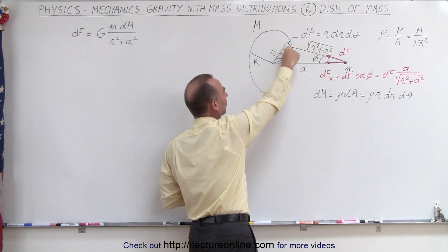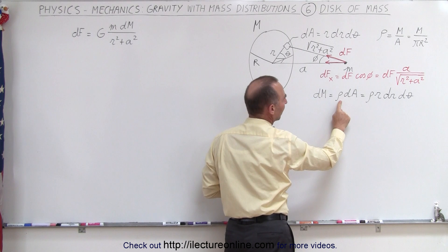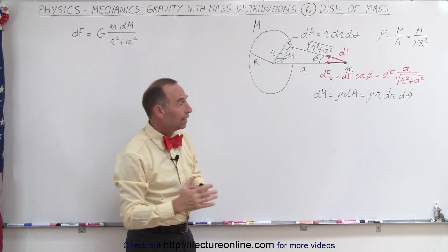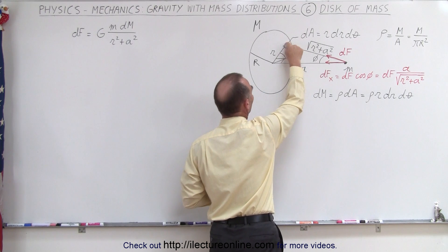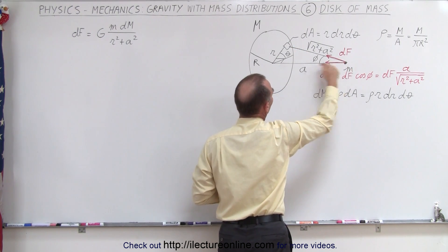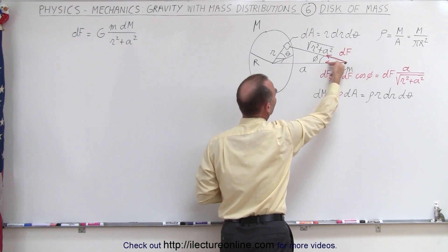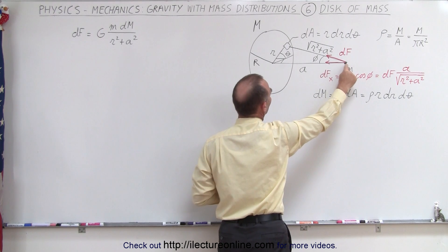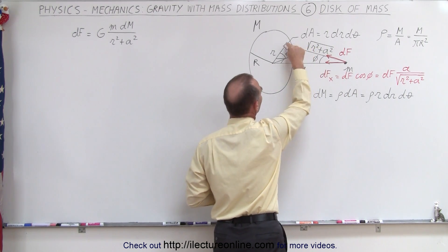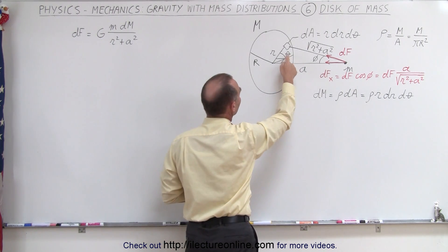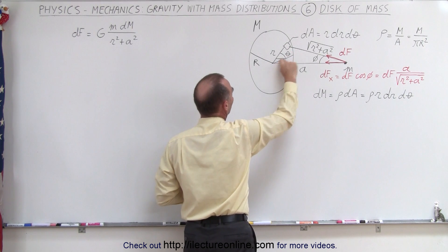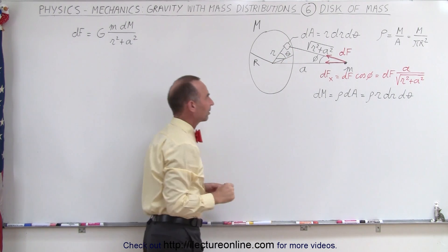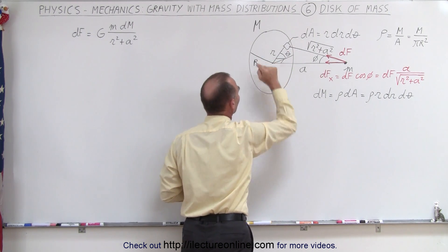The amount of mass contained within the small area element dm is simply equal to the mass per unit area times the area element, which can be written as ρ r dr dθ. The small amount of force dfx experienced by the mass due to the small area element is df times the cosine of φ, where φ is the angle between the distance from the mass to the center and the distance from there to the area element. θ will be integrated from 0 to 2π, and r will be integrated from 0 to the edge of the disc, which is big R.